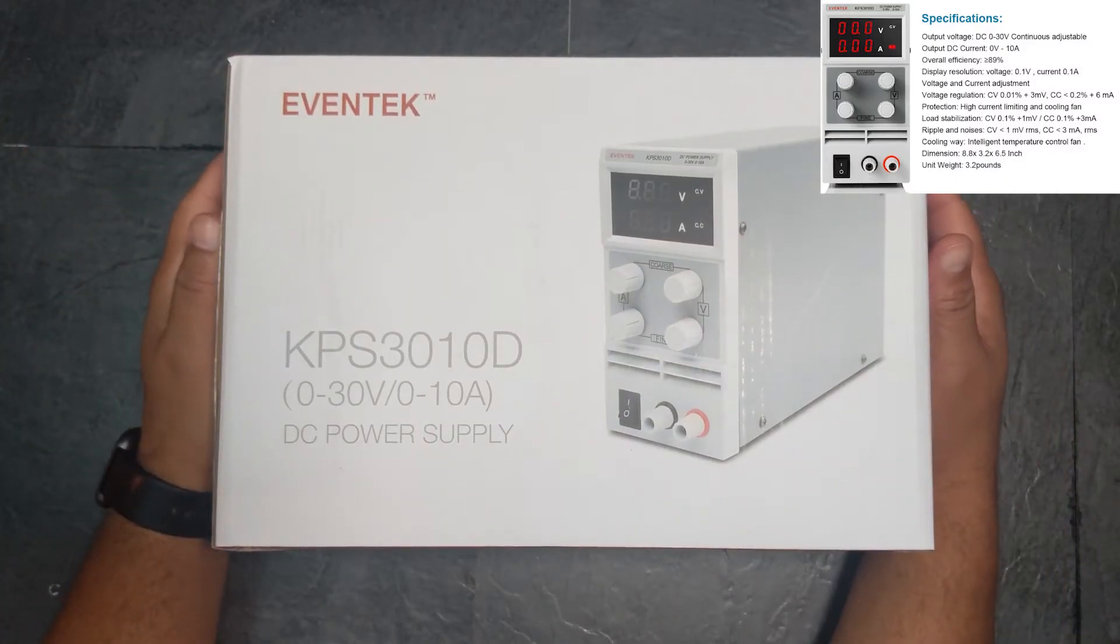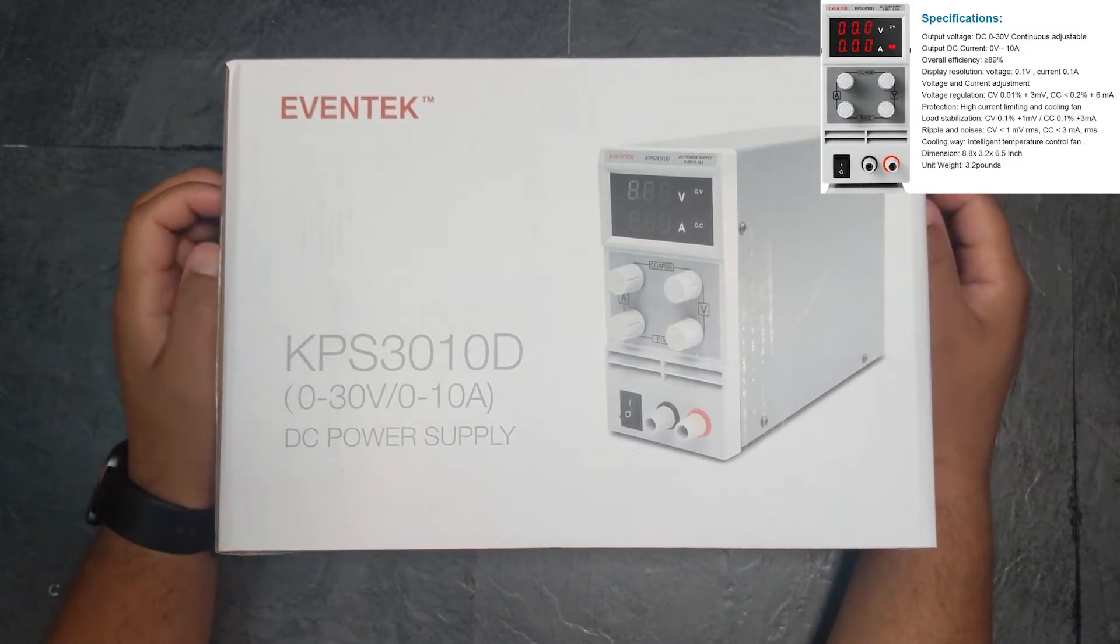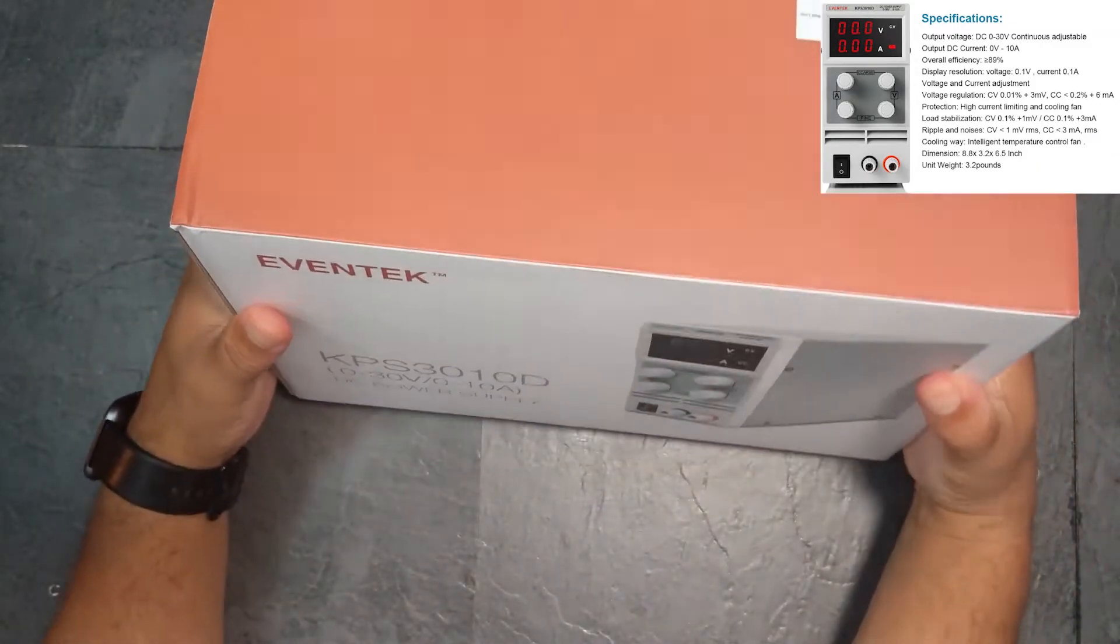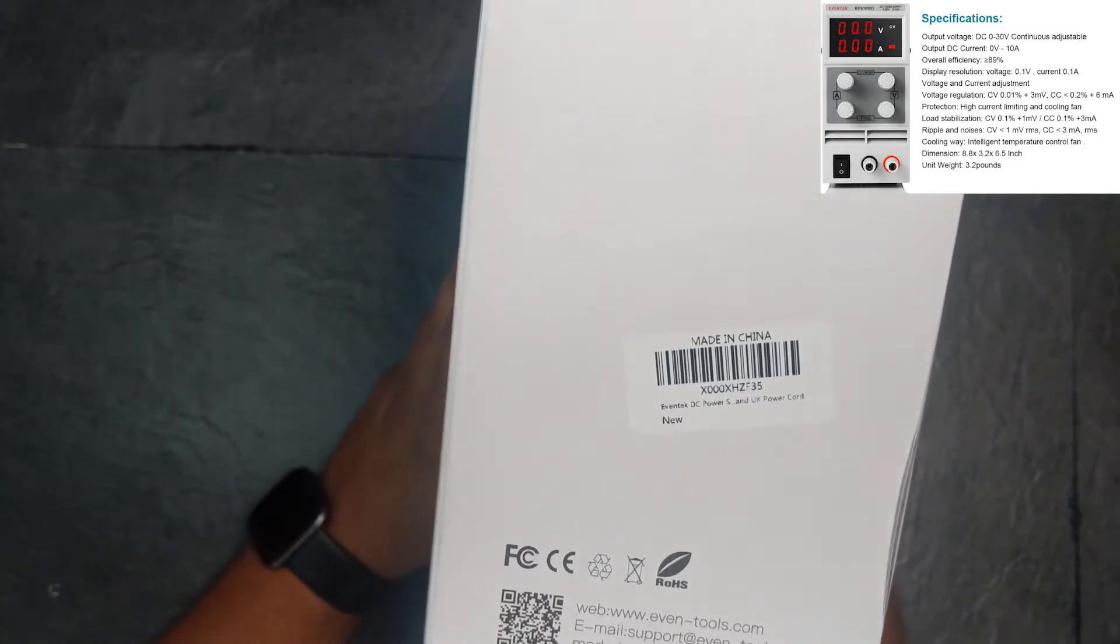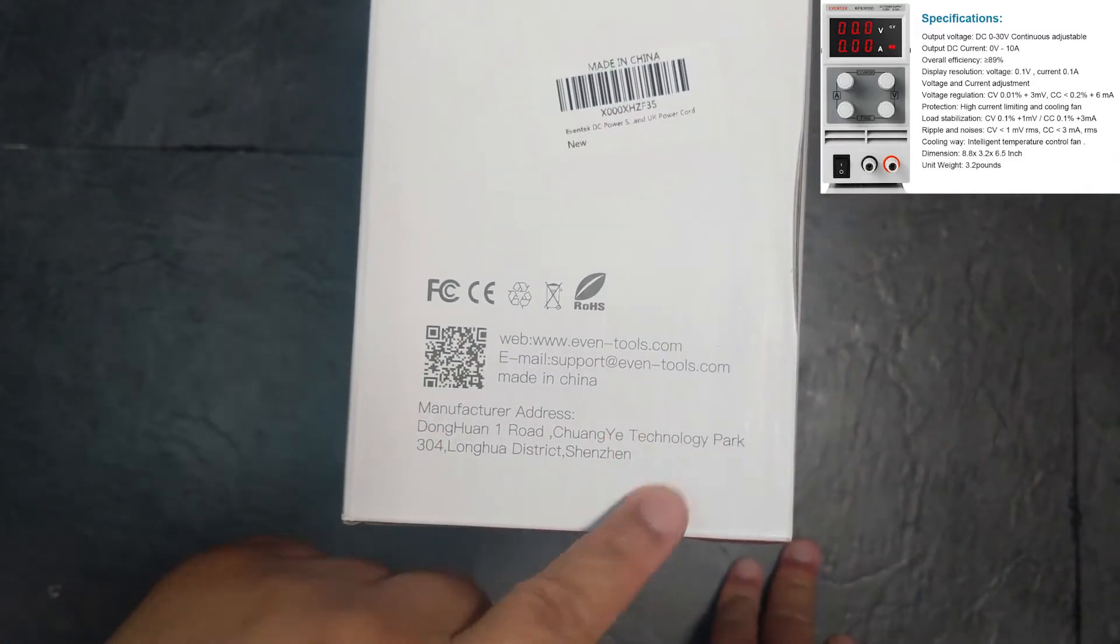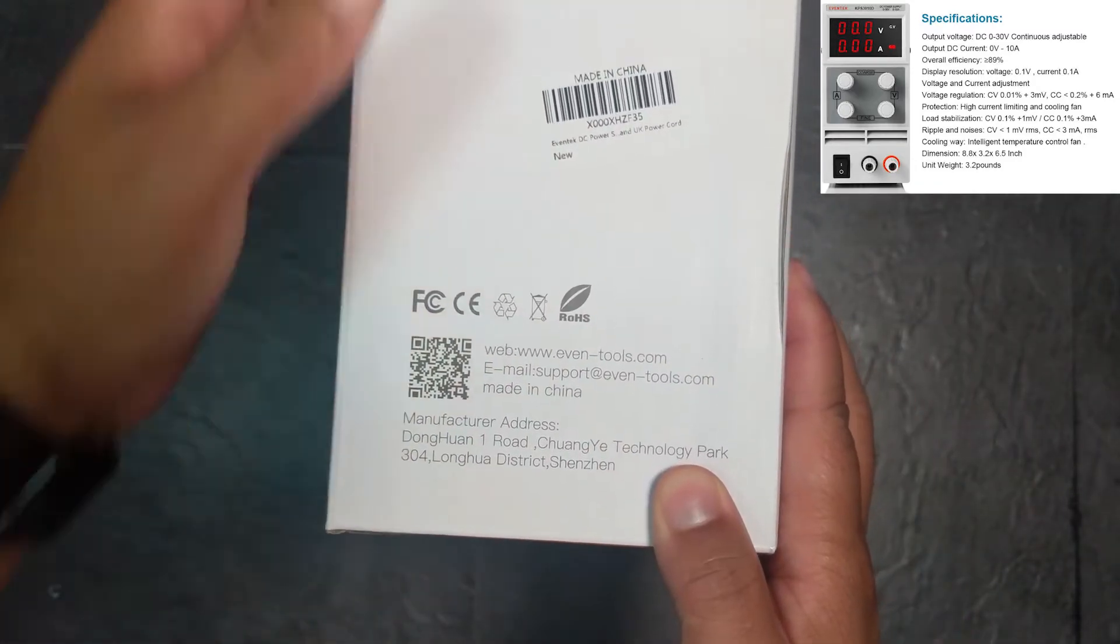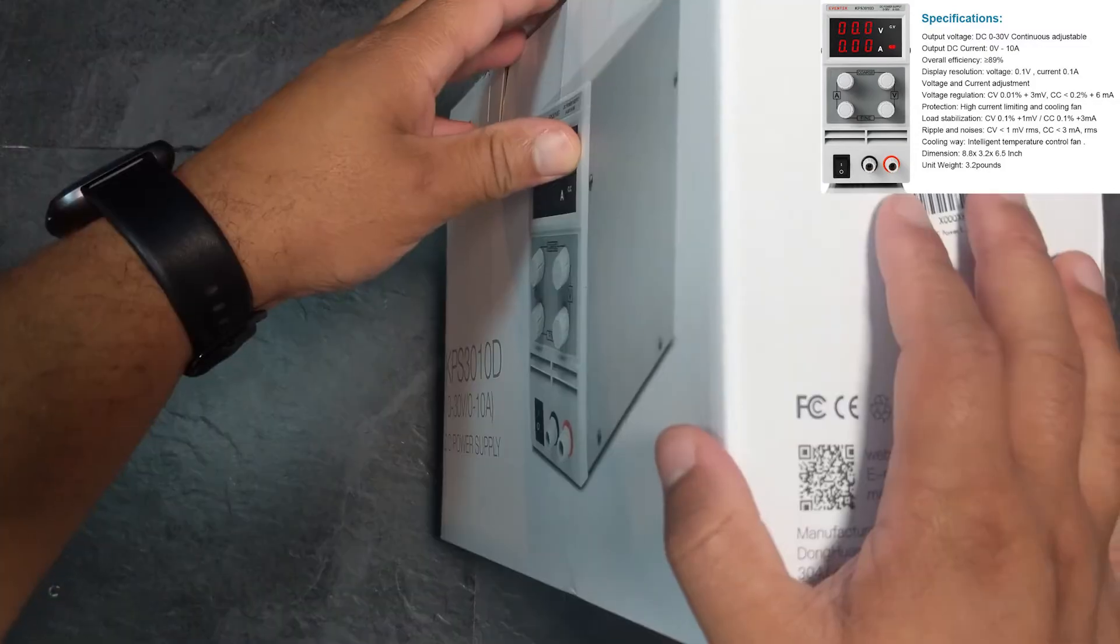Here's the Evantech KPS3010D DC variable power supply. Apparently it can output up to 30 volts and 10 amps. I've never heard of Evantech before. I'm going to assume it's a Chinese brand - Yuan Wangye Technological Park, Shenzhen. It's a Chinese brand. Apparently it's FCC certified, which is good.